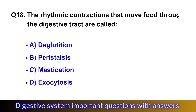Question No. 18: Rhythmic contractions that move food through the digestive tract are called? The right option is option B, peristalsis.